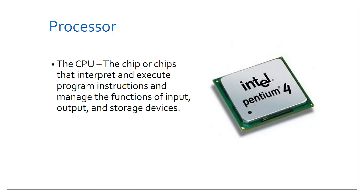Welcome to Learner's Coach. Today we are going to look at how the computer processor works, commonly referred to as the CPU or central processing unit. Basically, it is a chip found within the computer motherboard. It has the capability of interpreting and executing program instructions from input and output, and storing them within storage devices. There is a diagram here of an older version of a processor.